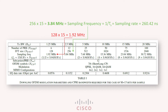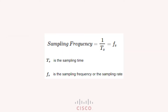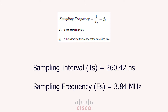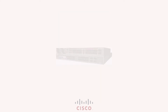Now at what rate do we need to sample this data? This gives us two terms: the sampling interval, or TS, which is 1/FS and equals 260.416 nanoseconds, and the sampling frequency, or FS, which is 1/TS and equals 3.84 megahertz. These two are very important numbers, so keep them in mind.